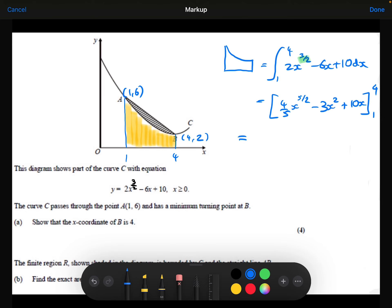Right, let's substitute our limits in then. We've got 4-fifths of 4 to the power of 5 over 2, minus 3 times 4 squared, plus 10 times 4. Then I'm going to subtract what I get when I substitute the lower limit of 1 in. So 4-fifths times 1 to the power of 5 over 2, minus 3 times 1 squared, plus 10 times 1. Which is going to give me 9.8. So that is my yellow area.